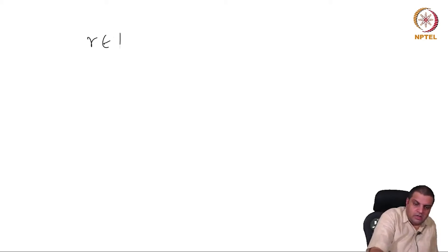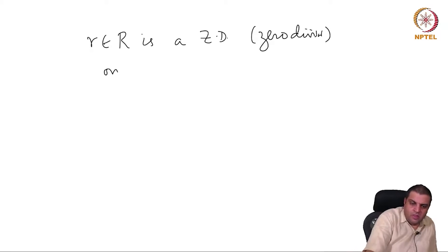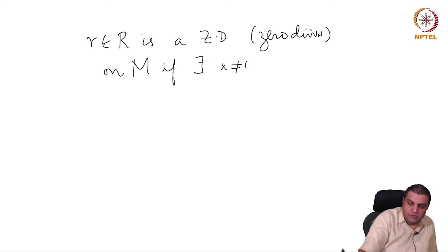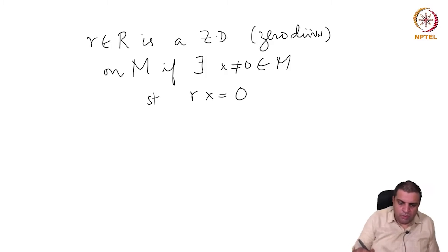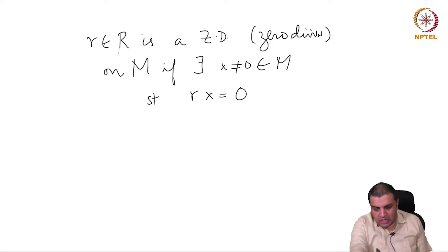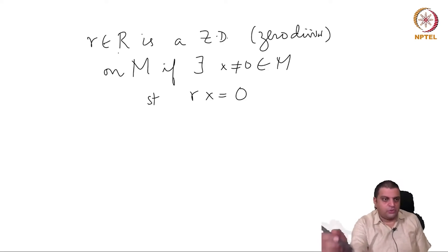What is a zero divisor? An element r in R is a zero divisor on M if there exists an x not equal to 0 inside M such that rx = 0. What we want to show is that every such r belongs to some associated prime, and conversely every element of an associated prime is a zero divisor.